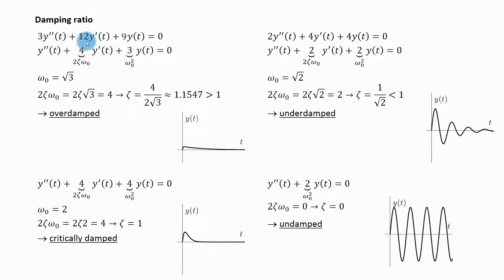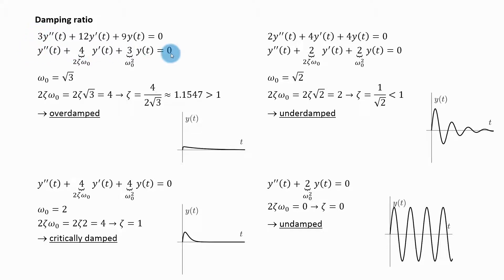Here I give you this differential equation and my question is what kind of damping does this system have? To figure this out I need to take this differential equation and divide it by the coefficient of the second derivative, so I need to divide by three. When I do that, I can read that my natural frequency squared is three and two zeta omega naught is four.